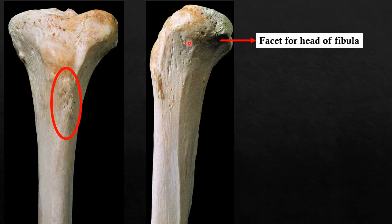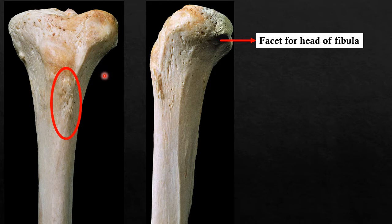At the lateral aspect of the tibia we can identify the lateral condyle. At the lower surface of the lateral condyle there is a facet for the head of the fibula, forming the superior tibiofibular joint. As you know, the tibia is placed medially and the fibula occupies the lateral part of the leg. The fibula articulates with the lateral condyle of the tibia to form the superior tibiofibular joint.